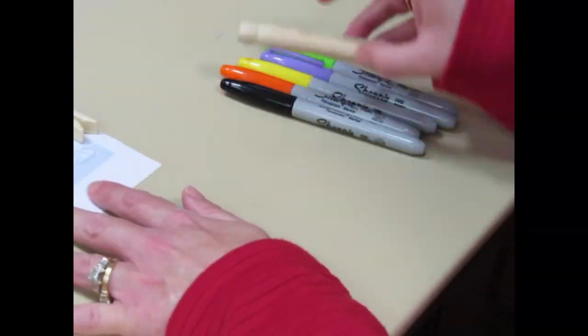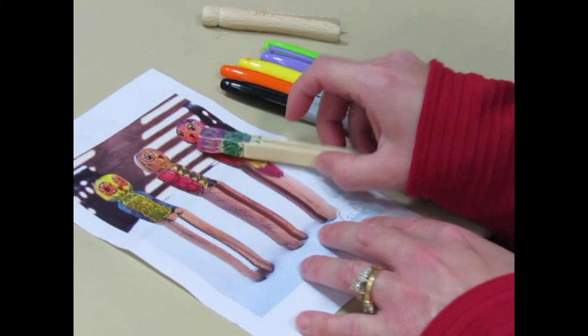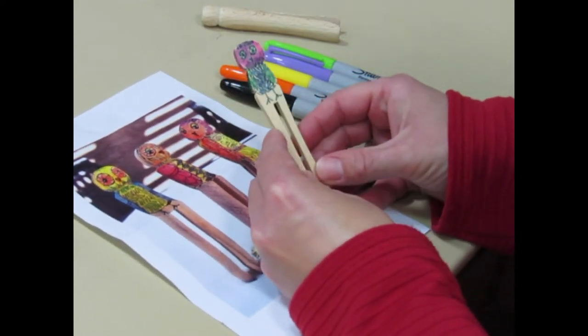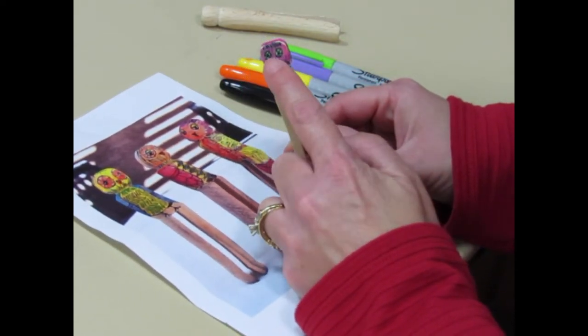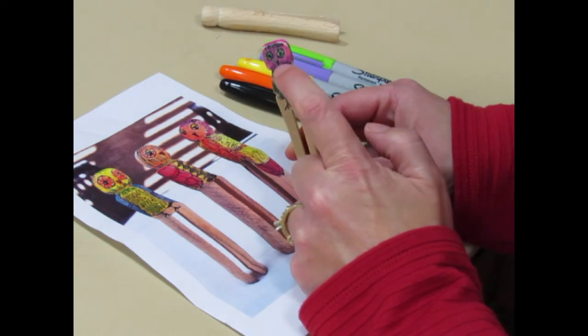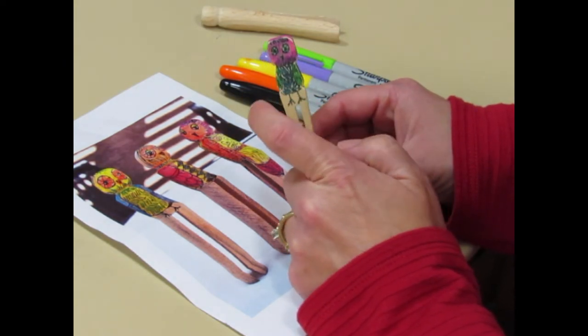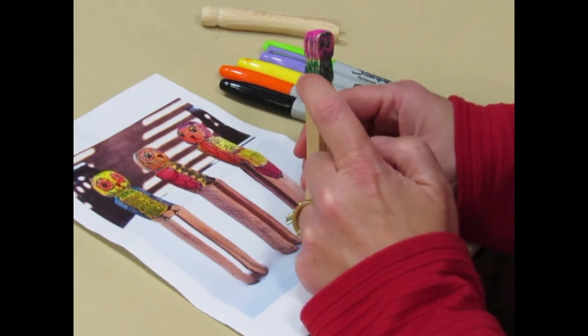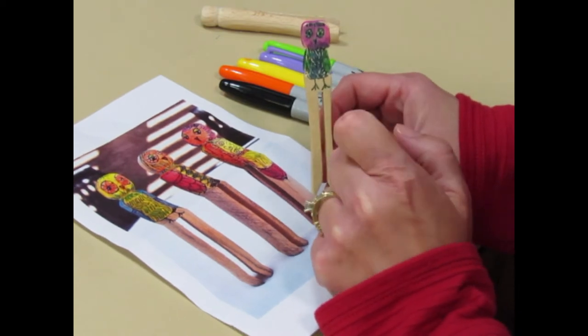All right, so I'm going to give this a try. You can see a little bit more of the detail on this one. Did the eyes, the beak, a little bit of texturing on the body and then put some wings on the side and the little feet there.